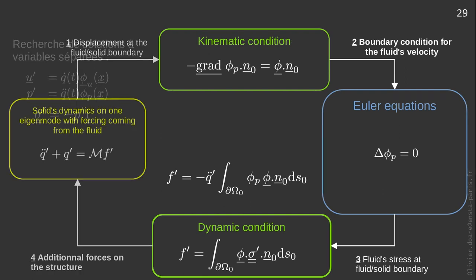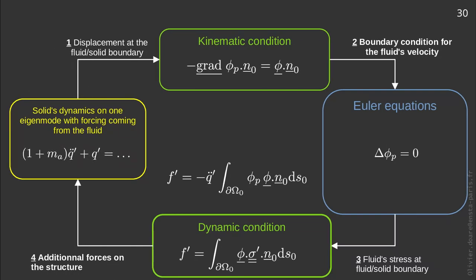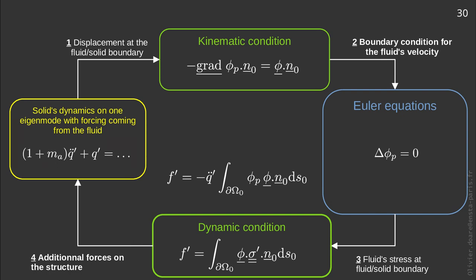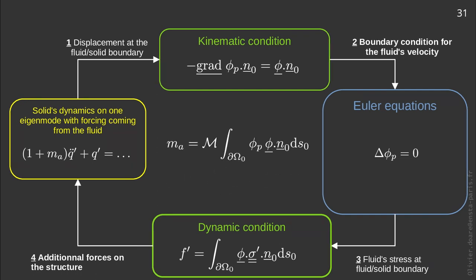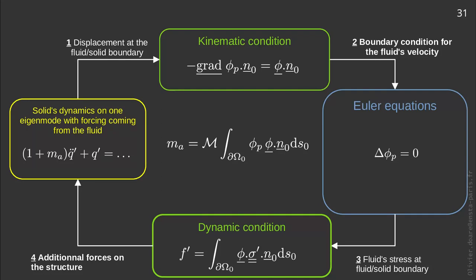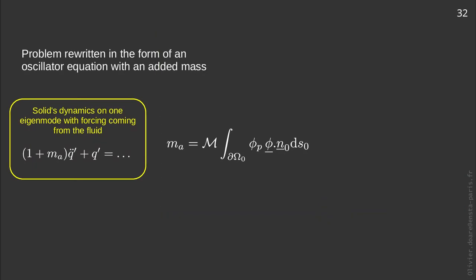All that remains is to introduce this into the oscillator equation. And since the force is proportional to q' dot dot, we can put it directly in the inertia term with a coefficient m_a that we called added mass. And here is finally the expression. The fluid structure problem in this approximation is now fully solved and we are now dealing with an oscillator equation with added mass.